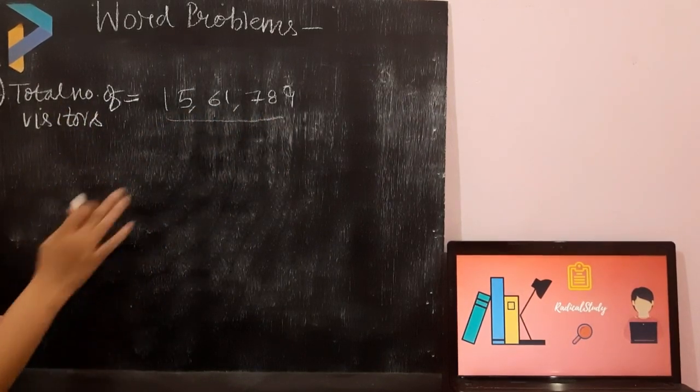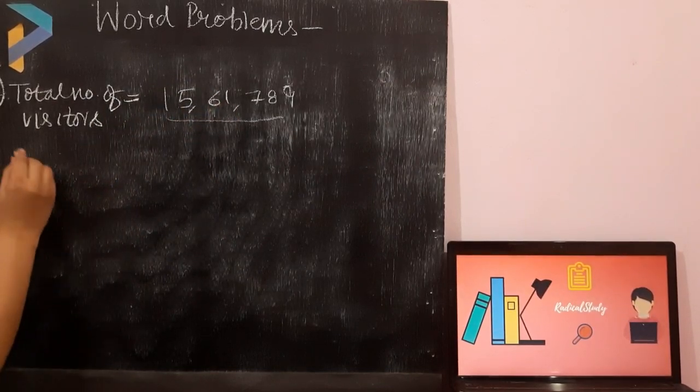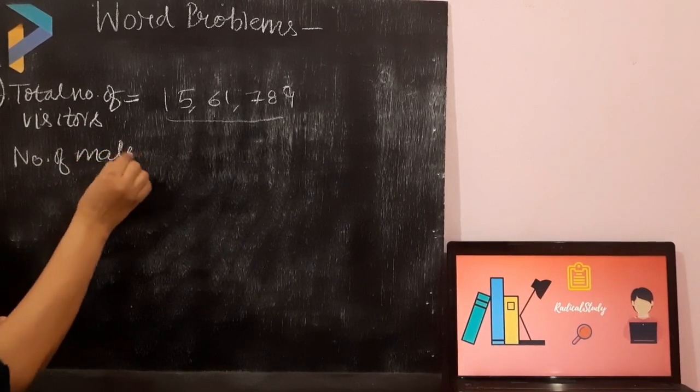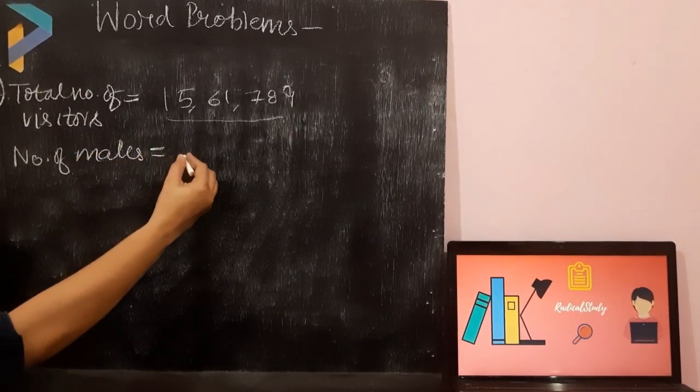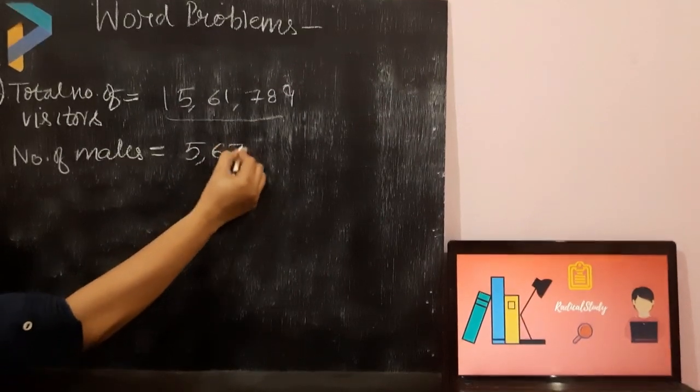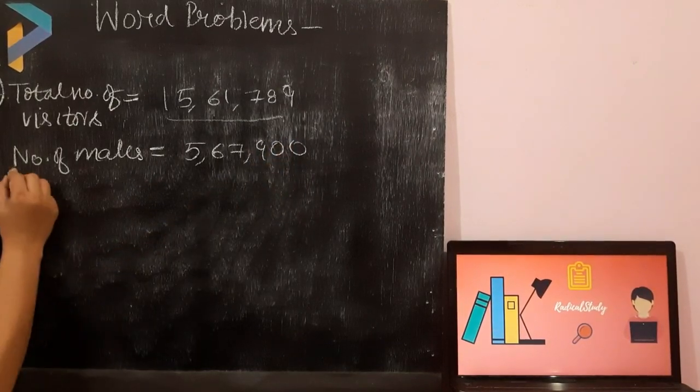Out of these, but like in sab mein se, now the number of males were, kitne males the? Number of males were 5,67,900. 5,67,900 males have visited that event.